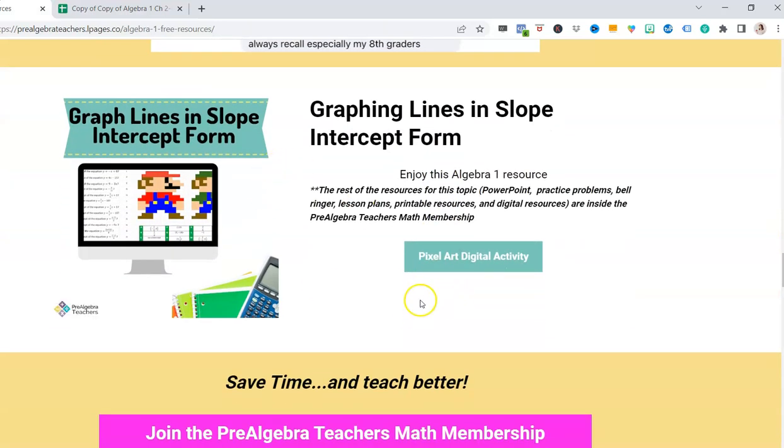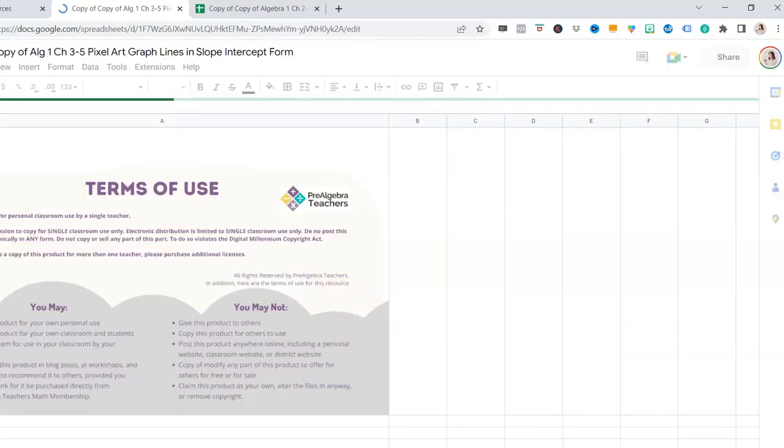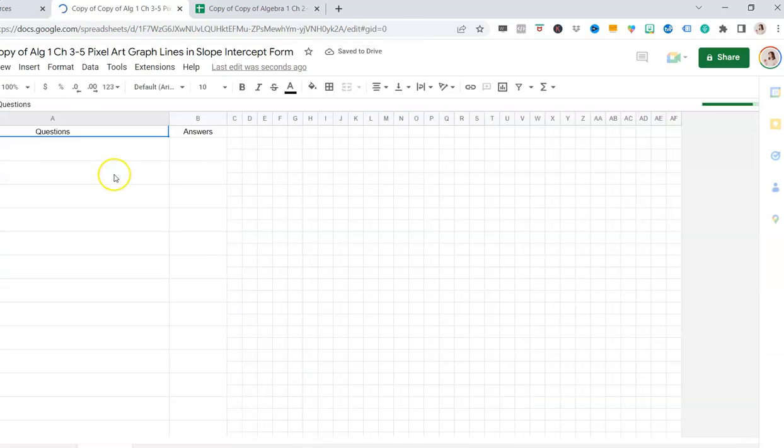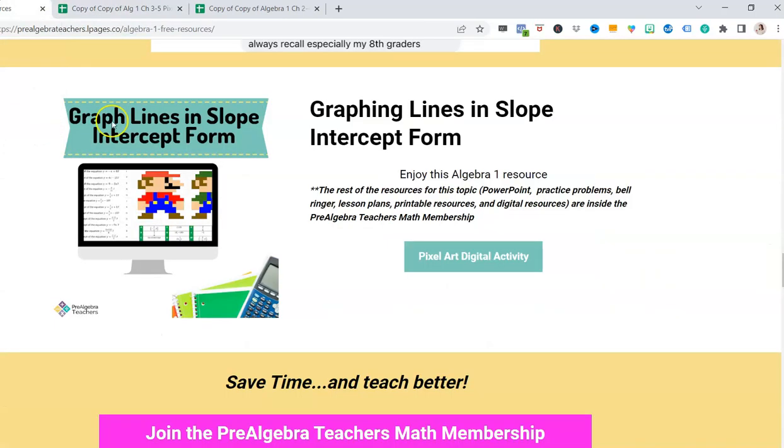Next we have Graphing Lines and Slope Intercept Form. This is our Pixel Art, again a digital activity. Again, this is made in Google Sheets, so if you use Microsoft, you can download this in Excel and it will work exactly the same. They will have all of the questions here. They will match the answers here in the answer box, and then as they answer—so the first answer is L. If I punch in L, you can see here since that is the correct answer, I have these pixel colors that have appeared on the screen. If I get it wrong, let's just say I punch in N, you can see nothing happens. In the end it will come up like this. How fun is that? The pixel art activities are one of my students' most favorite activities.